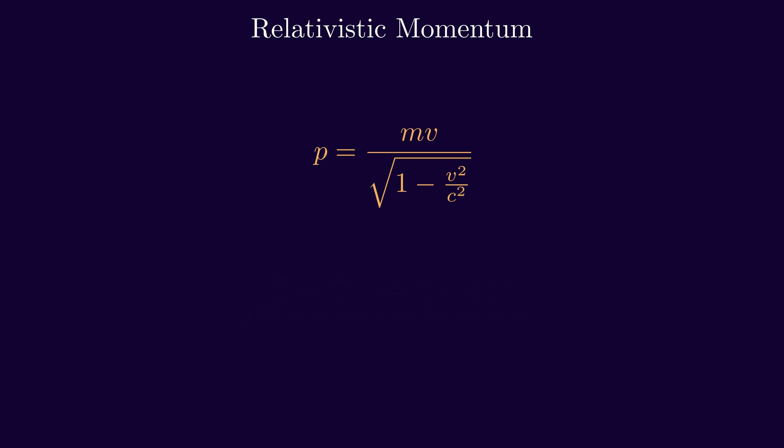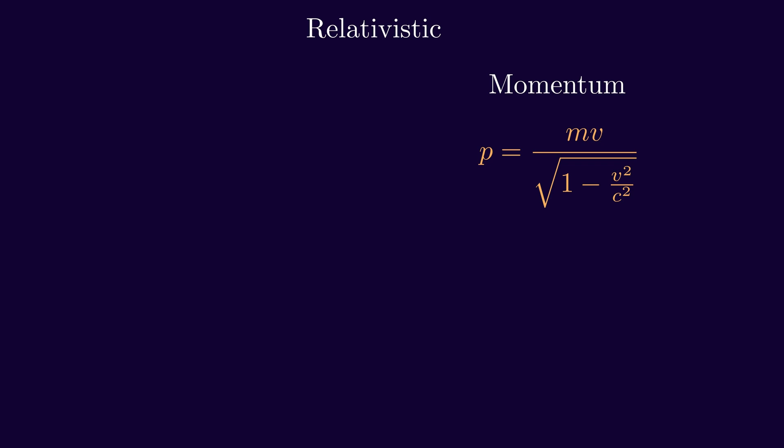However, we cannot directly calculate photon momentum using the standard relativistic momentum formula since photons have zero mass and travel at the speed of light, resulting in an indeterminate form of 0 divided by 0. To overcome this, we turn to the relativistic energy equation.